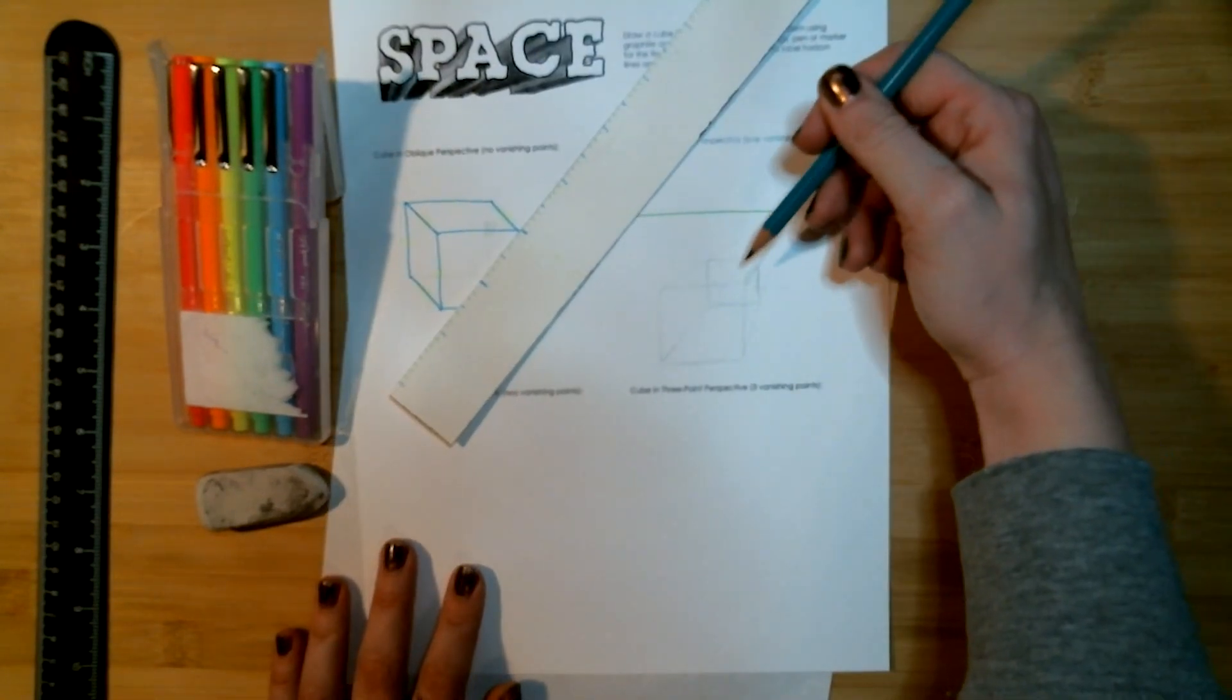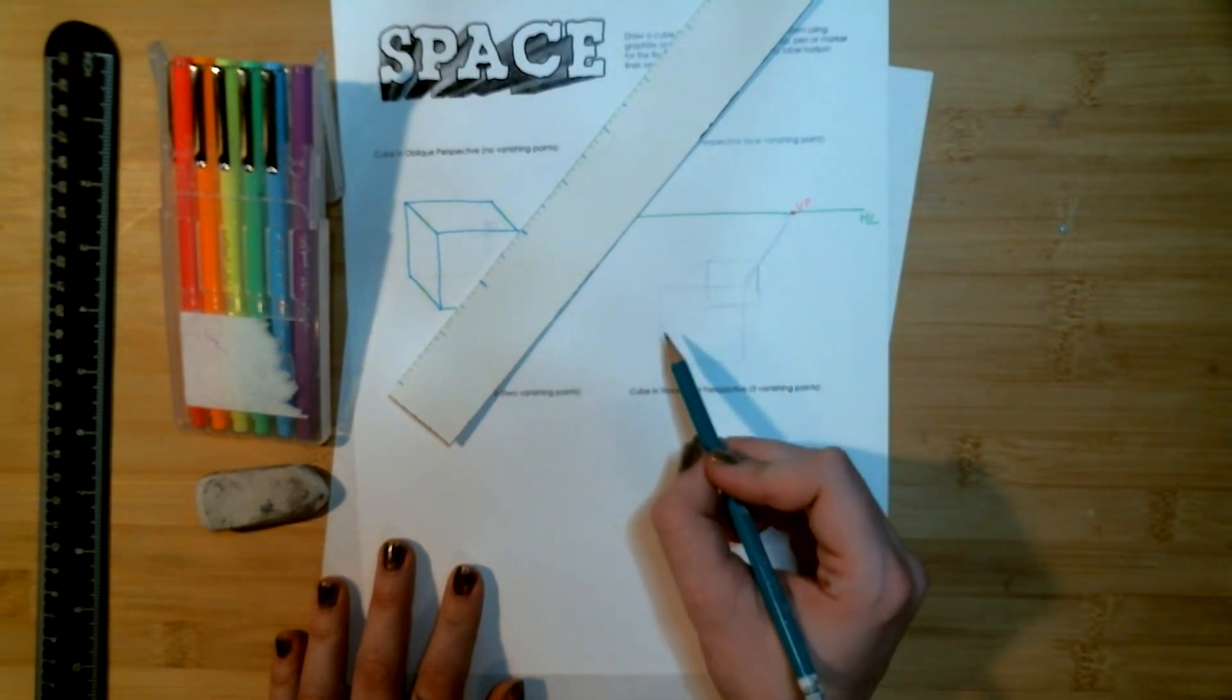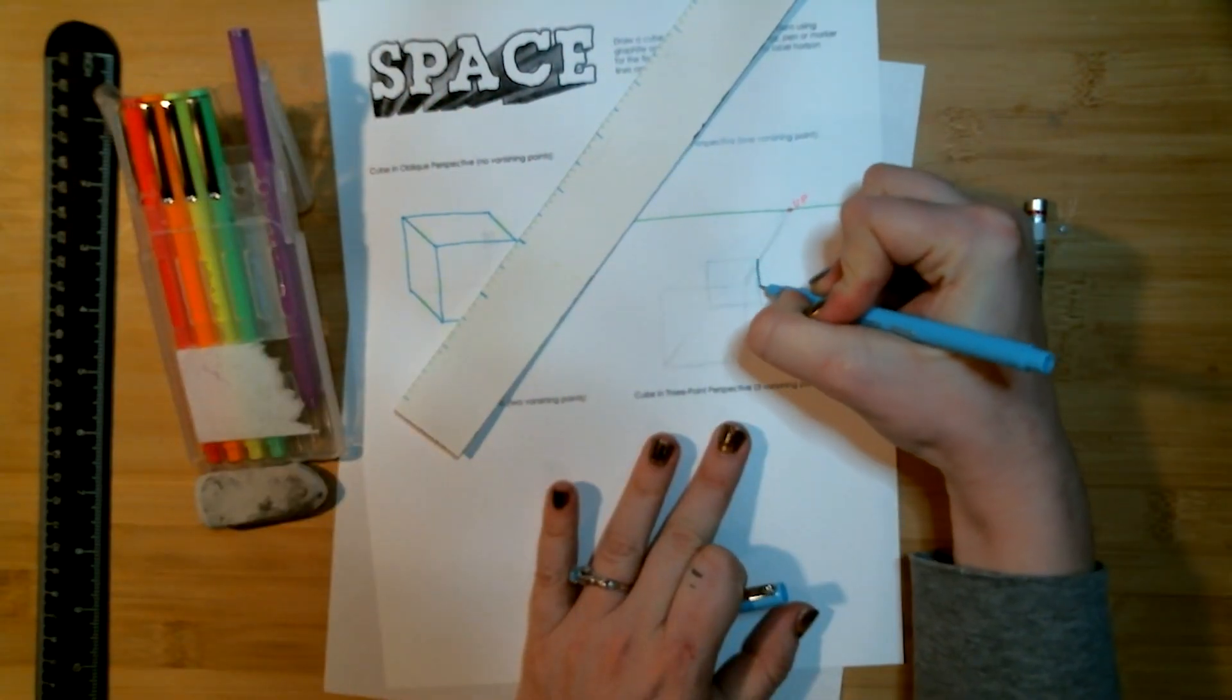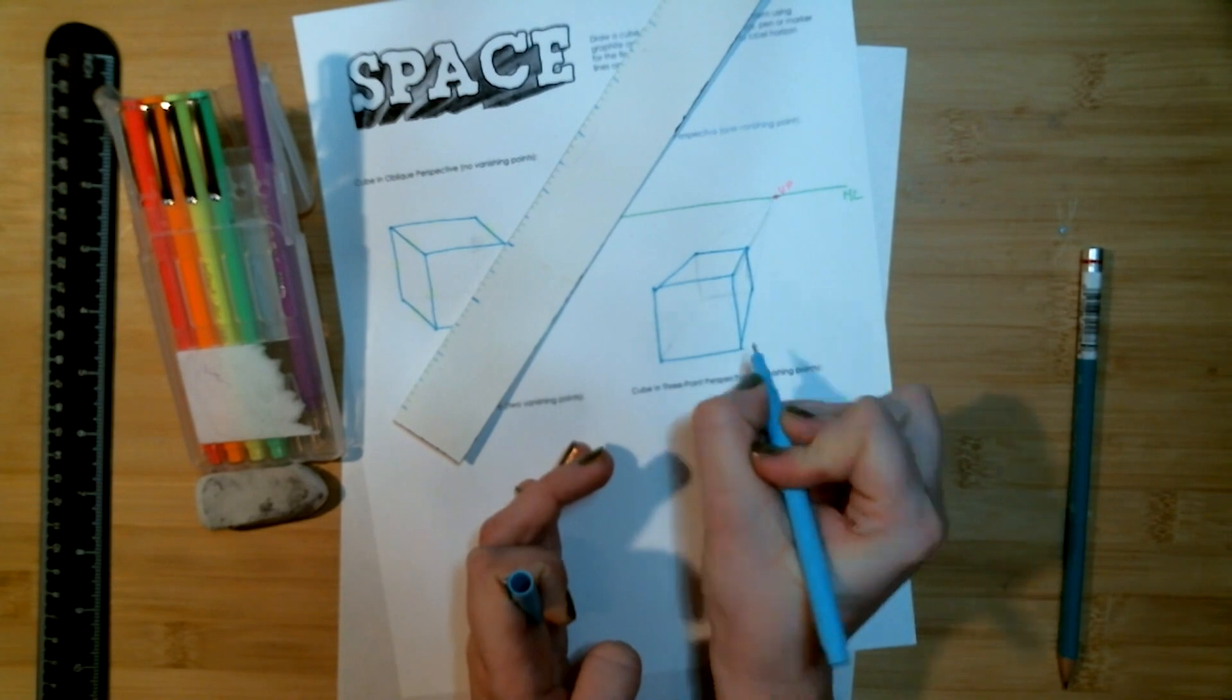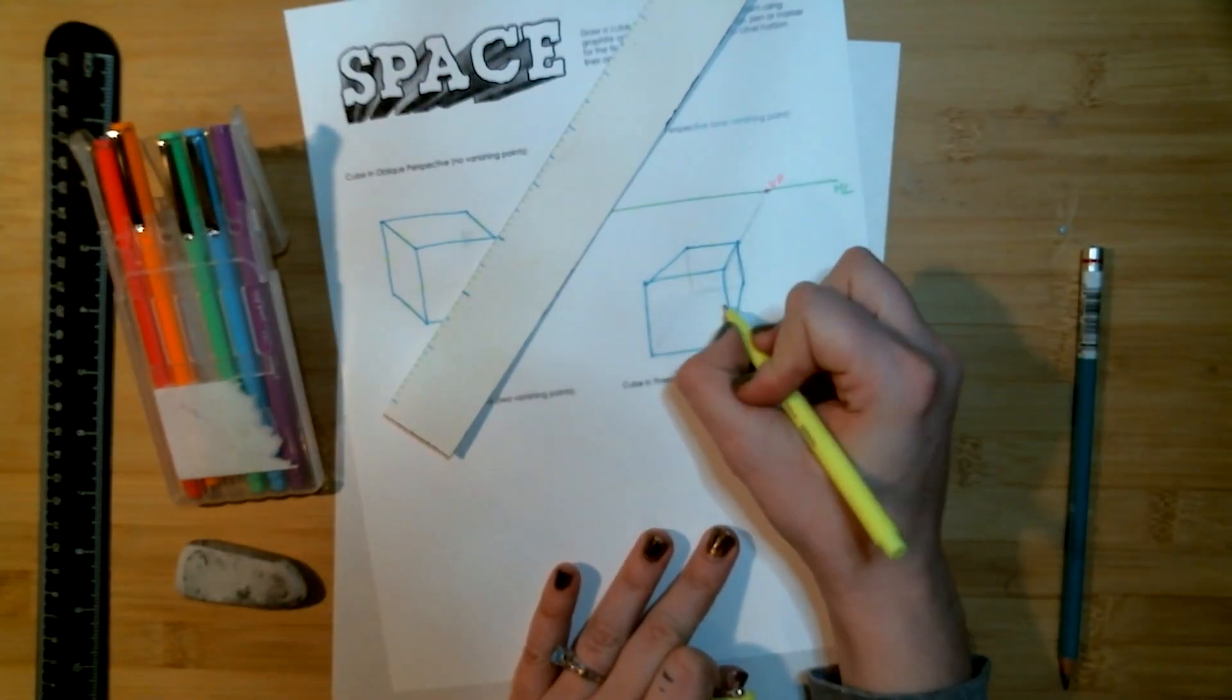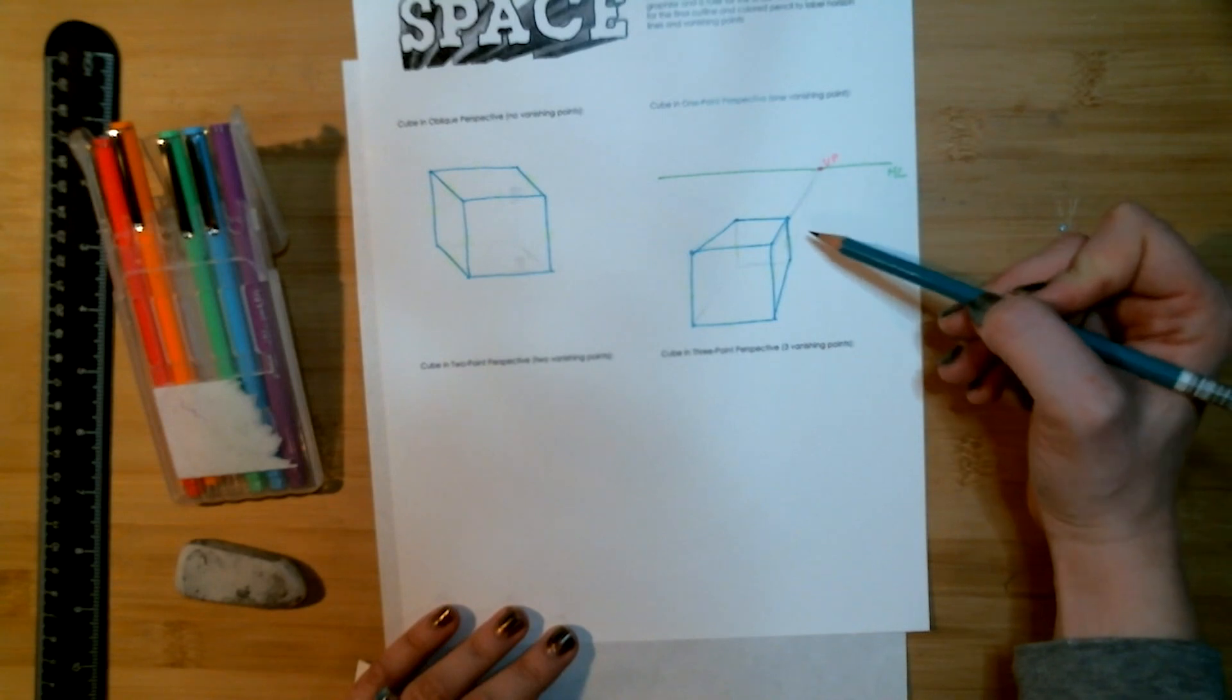So this is if we are looking down the top of the cube. Now I'm going to outline my box right here and then I'm going to do my two sets of parallel lines. So already our box is starting to look more dimensional going back into space. We're going to increase that.